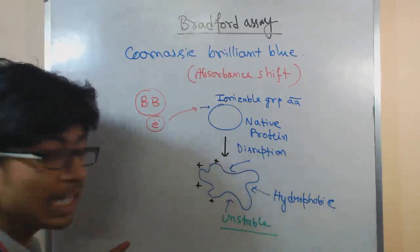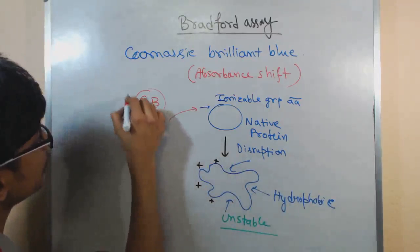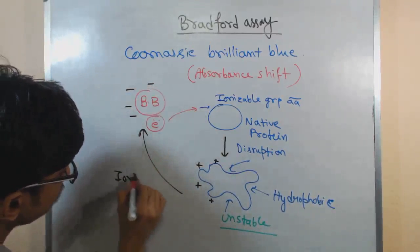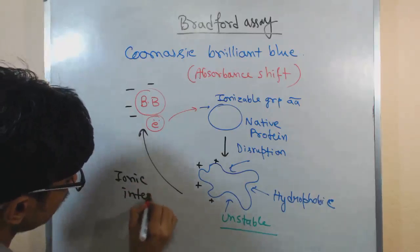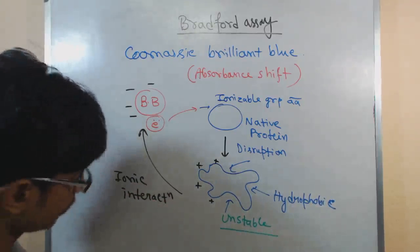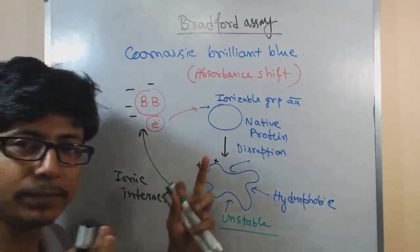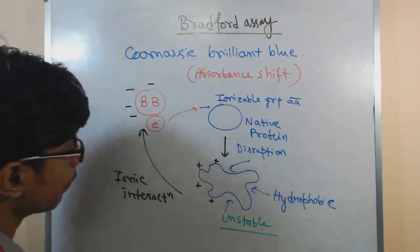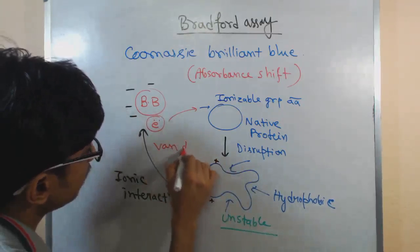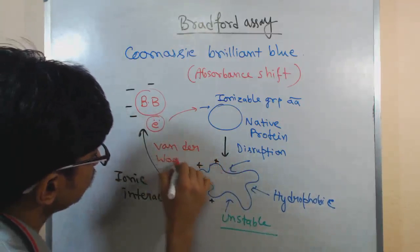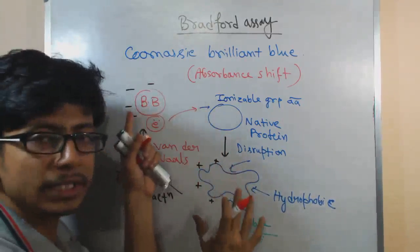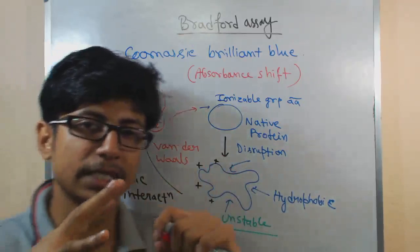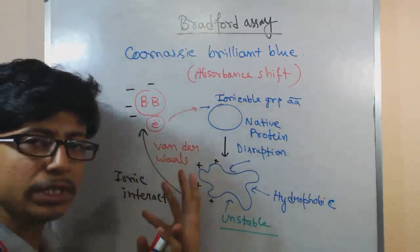They will pair via ionic interaction. They will bind with themselves by ionic interaction and this interaction gets much more stabilized by the surface Van der Waals force that is generated between this dye and this protein complex. So ultimately this dye and protein complex, once they are arranged within itself, this dye is in a bound form.